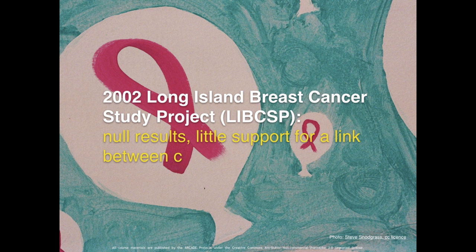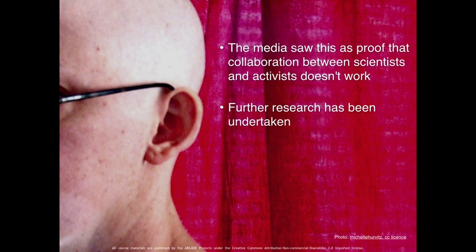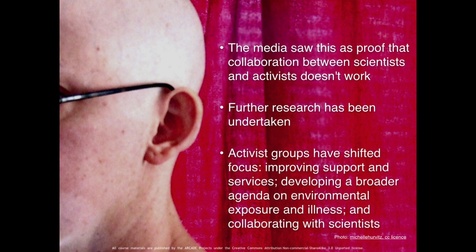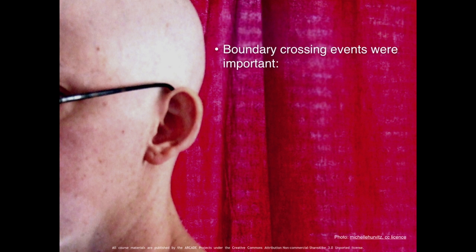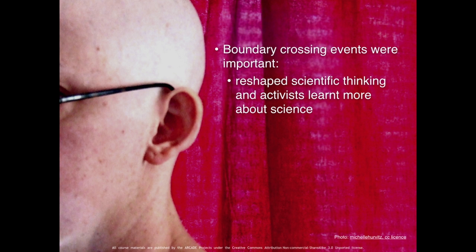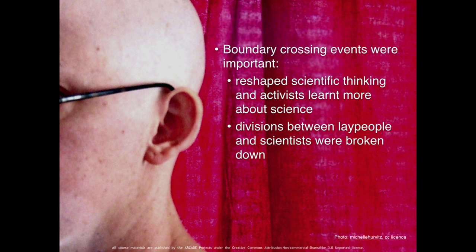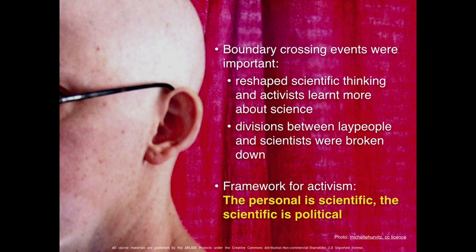Since then, further research has been undertaken and the collaboration with scientists has continued. Activists have shifted their focus from the disease itself and the collection of evidence to improving support and services, and to developing a broader agenda on environmental exposures and illness. There is no conclusive evidence, but boundary-crossing events were important. The citizen science alliances reshaped scientific thinking, and advances were made in breast cancer etiology. The alliances broke down many of the conventional divisions between local people and scientists, and this shaped public struggles over knowledge production. It created a framework for health activism — namely, that the personal is scientific, and the scientific is political. This clearly draws on feminist epistemology, and as one woman commented on hearing that her friend had breast cancer: 'I refuse to accept that this is natural and inevitable.'